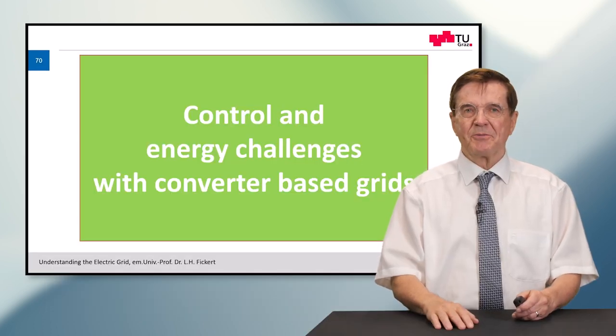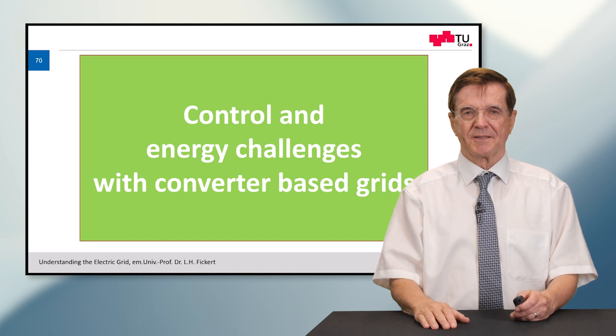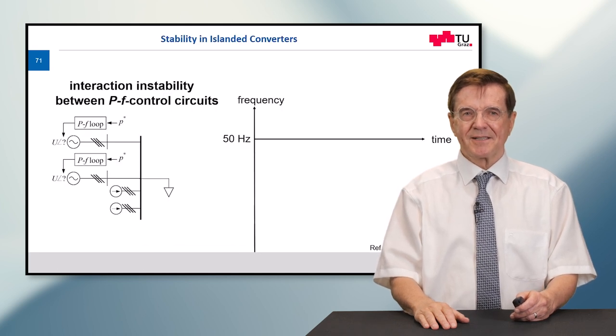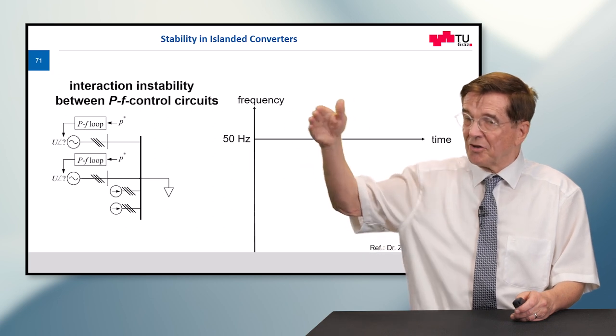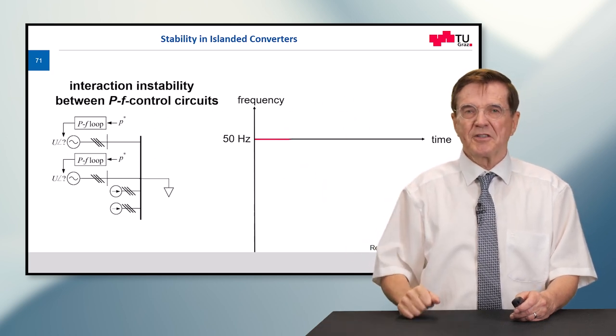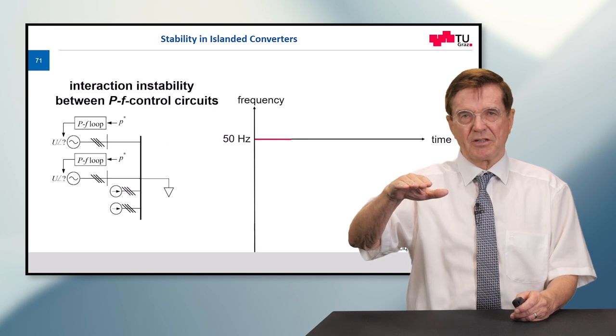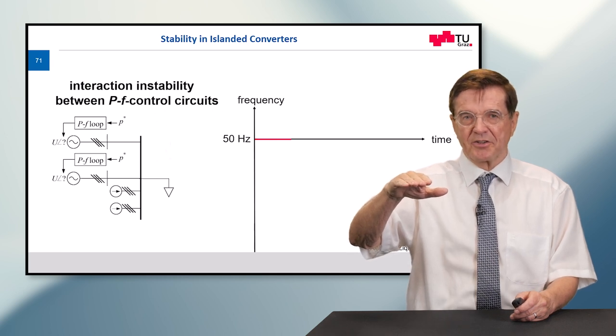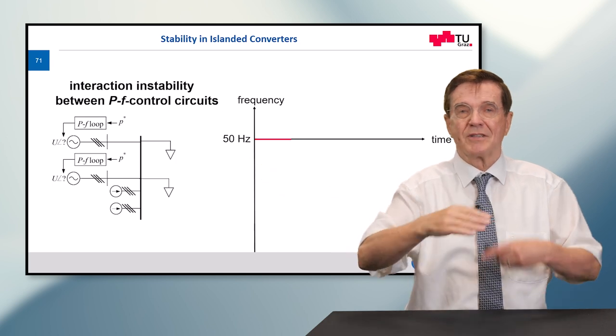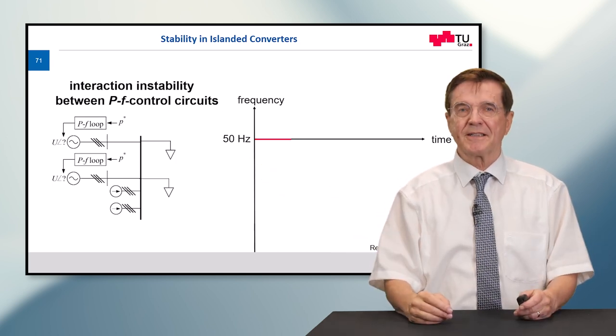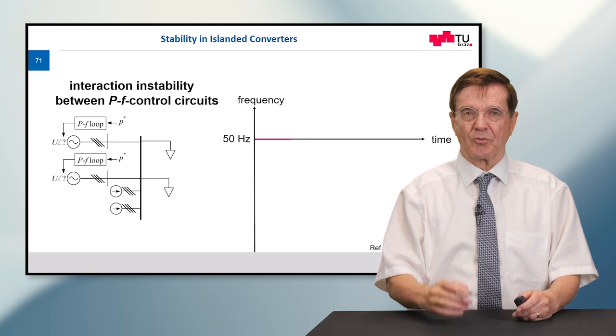So how is the interaction between converters and rotating machines? Let's see a system which is made up of rotating machines and of converters. At first the system is running smoothly, no doubt about this. Now we switch on a load. The load is switched on and what happens? Before all these regulating circuits come into effect, the frequency will go down.